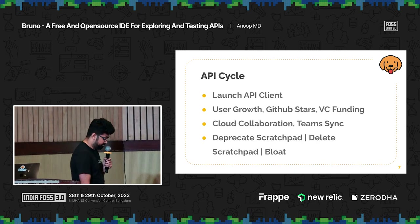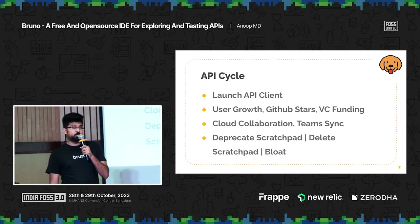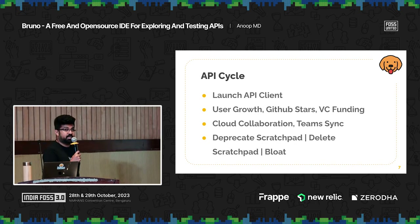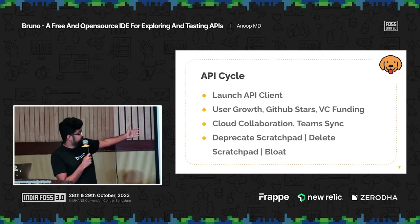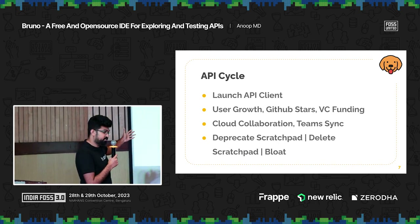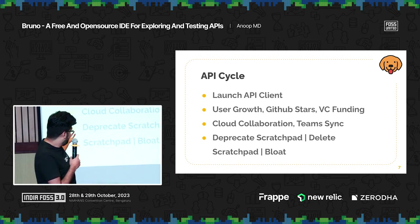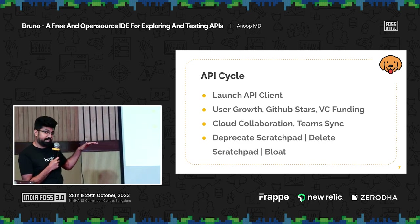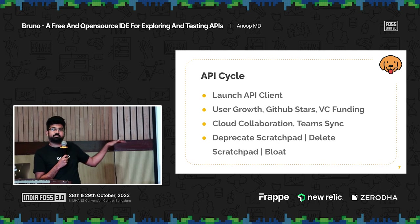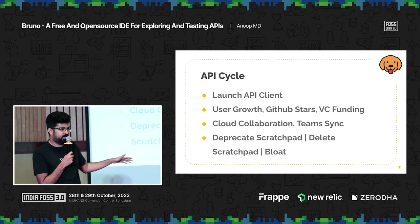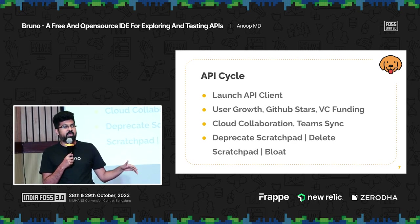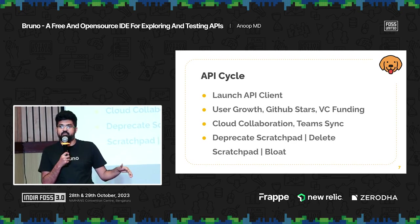Let's talk about API clients. This is a typical playbook. Postman is the OG of API clients, who started this journey in 2015. After that, every API client — Insomnia and everything else — follows this playbook: you launch, get user growth, get GitHub stars, get VC funding, add cloud collaboration, team sync. And then finally you deprecate and delete the scratch pad and force everyone to use a cloud account. That's what happened on September 28th. Insomnia and Postman forced their users to go cloud or nothing — and developers got pissed off. That's when they started looking for something better, and that's when Bruno got the visibility.